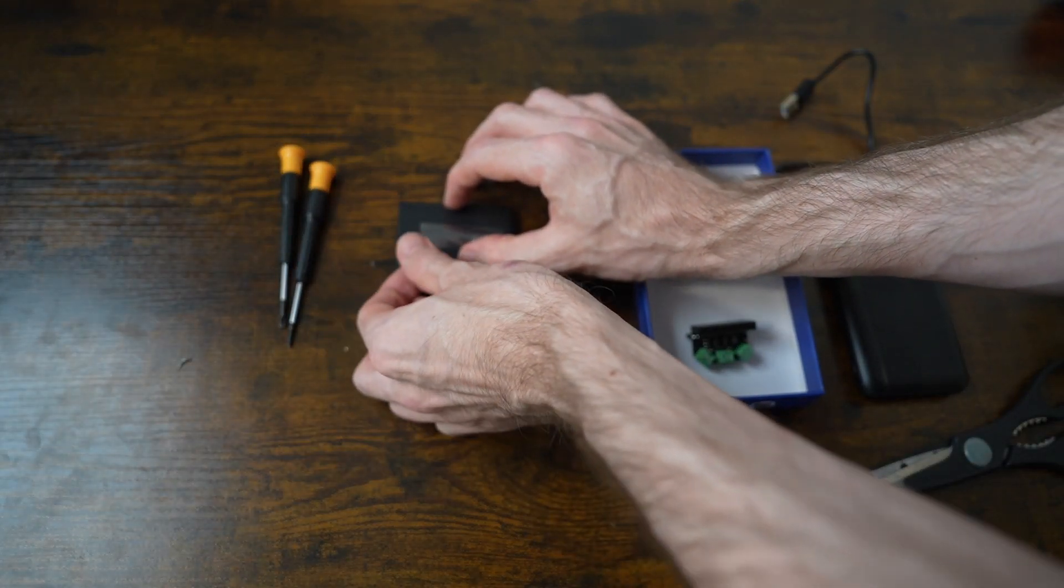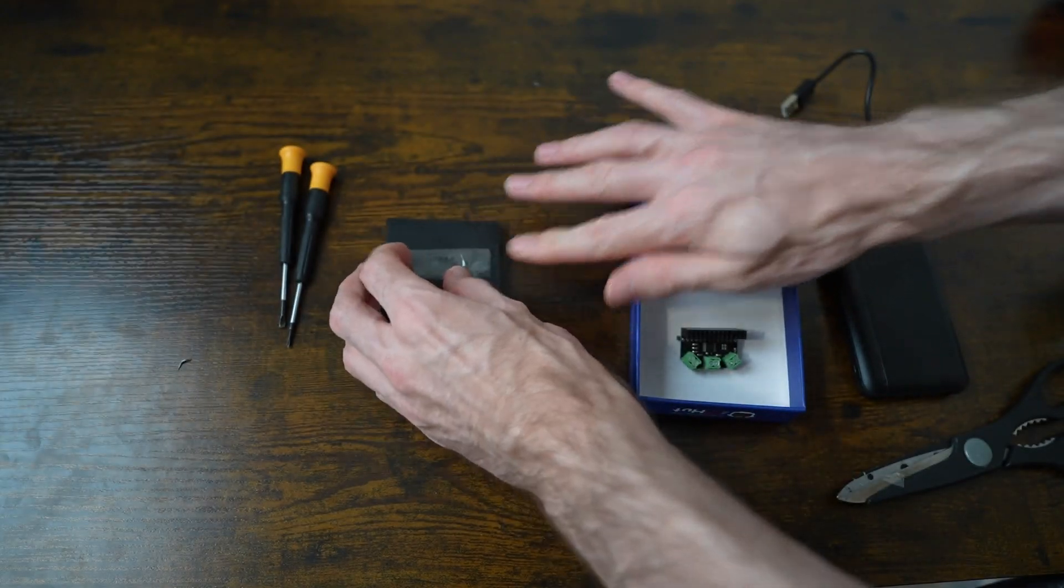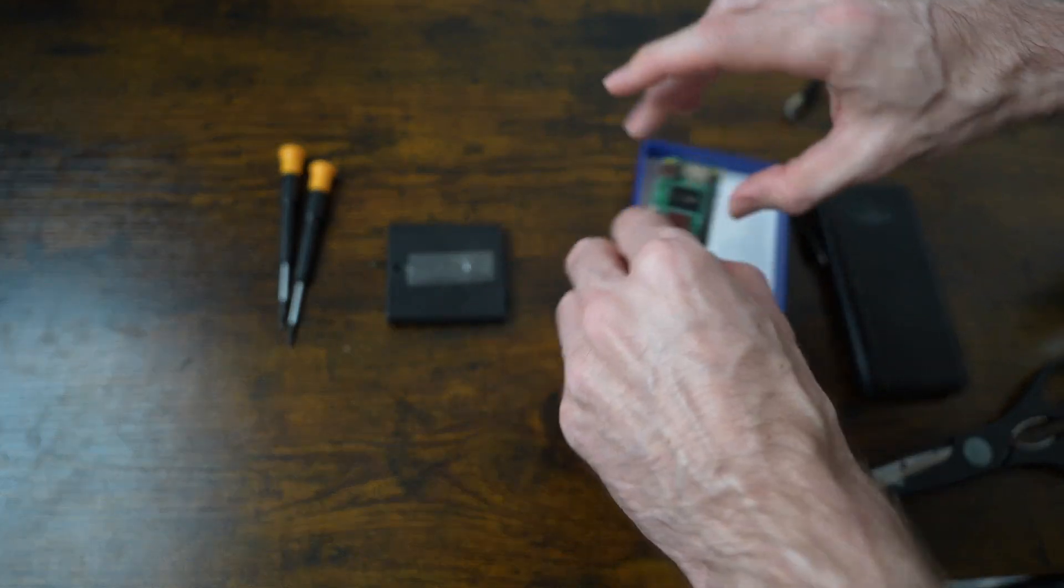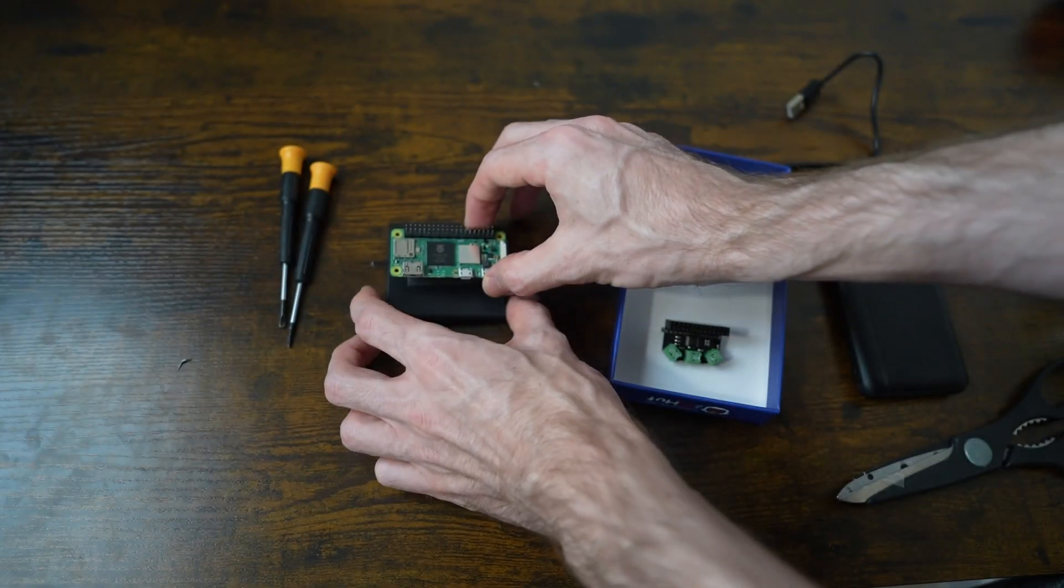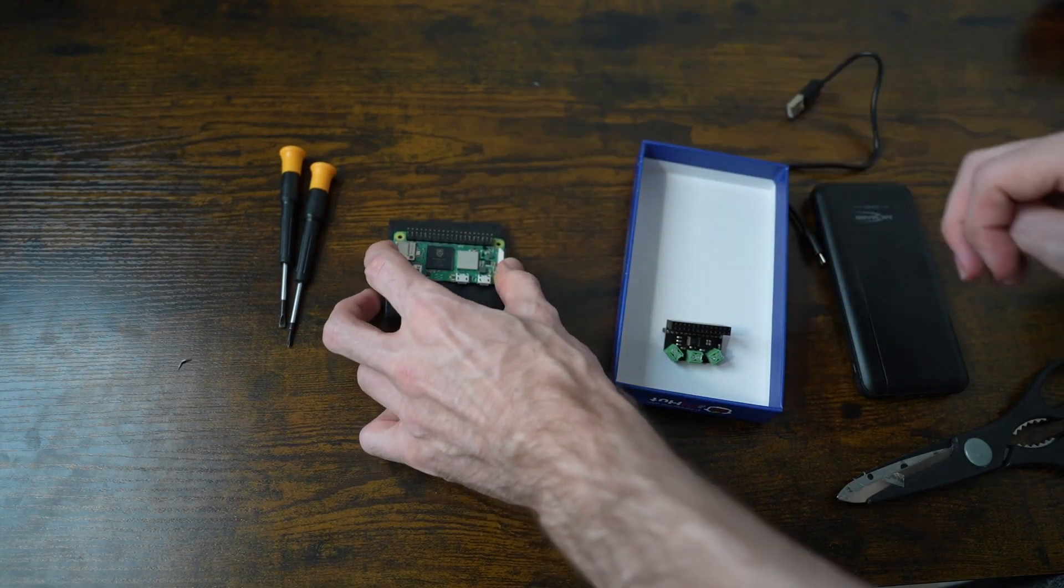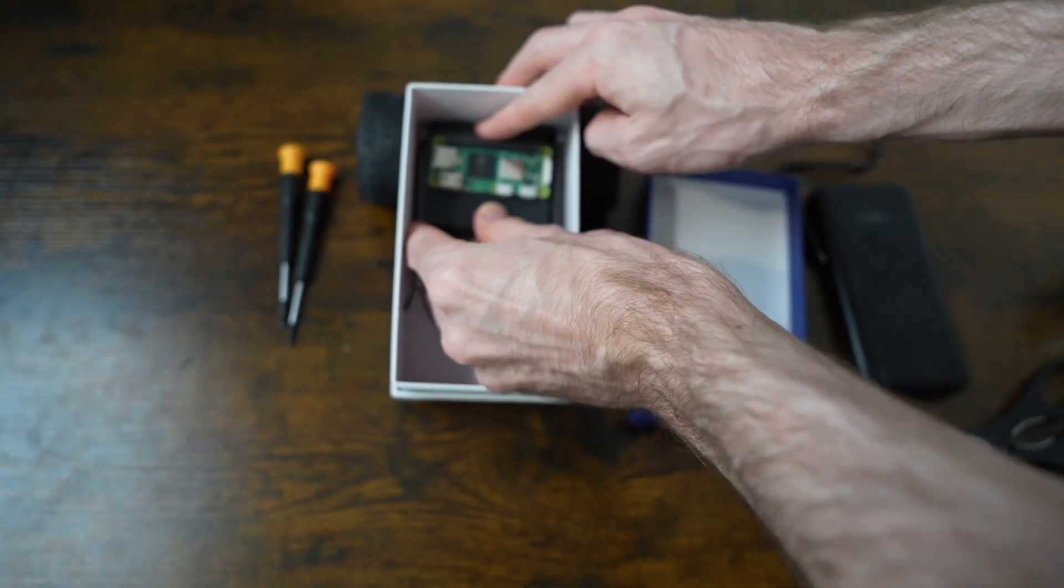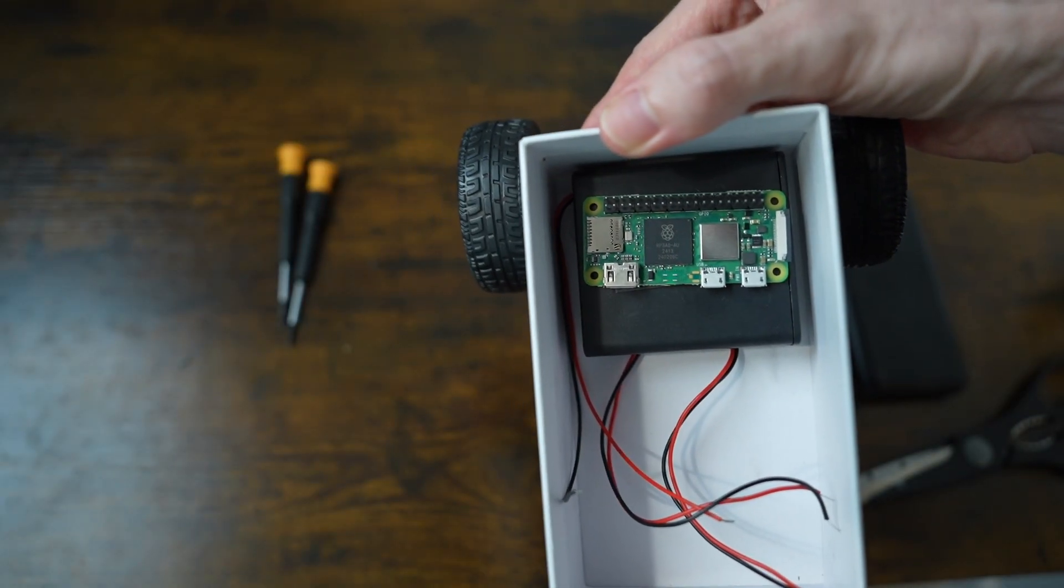I also use the cover to stick down the Raspberry Pi and control board, so it's easy to remove from the box. Stick the Raspberry Pi to the cover with double-sided tape. Make sure the SD card slot is facing towards the outside of the cover. Once it's slotted in, it should look like this.